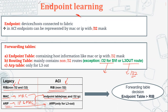The forwarding decision is based on this rule: when traffic hits a leaf switch port, it will first check the endpoint table. If the information is not found in the endpoint table, it will then look into the routing table. This is the forwarding decision that a leaf switch will take.